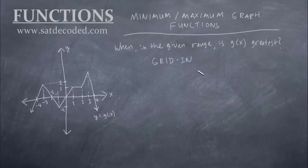And this one is a grid-in, so they don't give us any multiple choice. So we're just going to have to solve it ourselves. Alright, so same idea. When, in the given range, is g of x the greatest? So g of x, again, is our output, which is our y value. So this time, instead of asking for the smallest or the least y value, they're asking for the greatest.